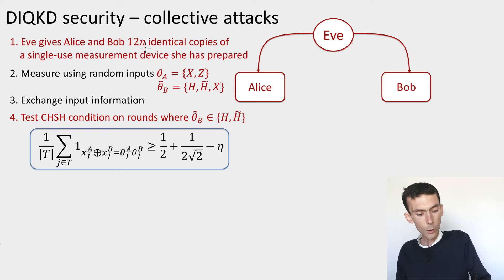I'm going to have 12n rounds of this protocol with the goal of generating n bits of key. This number 12 is not too important, but it's going to be convenient for us. The restriction on Eve now is that she's restricted to performing collective attacks. What this means is that instead of just giving one general pair of devices to Alice and Bob that they're going to use sequentially, Eve is restricted to giving them 12n copies of the same device.